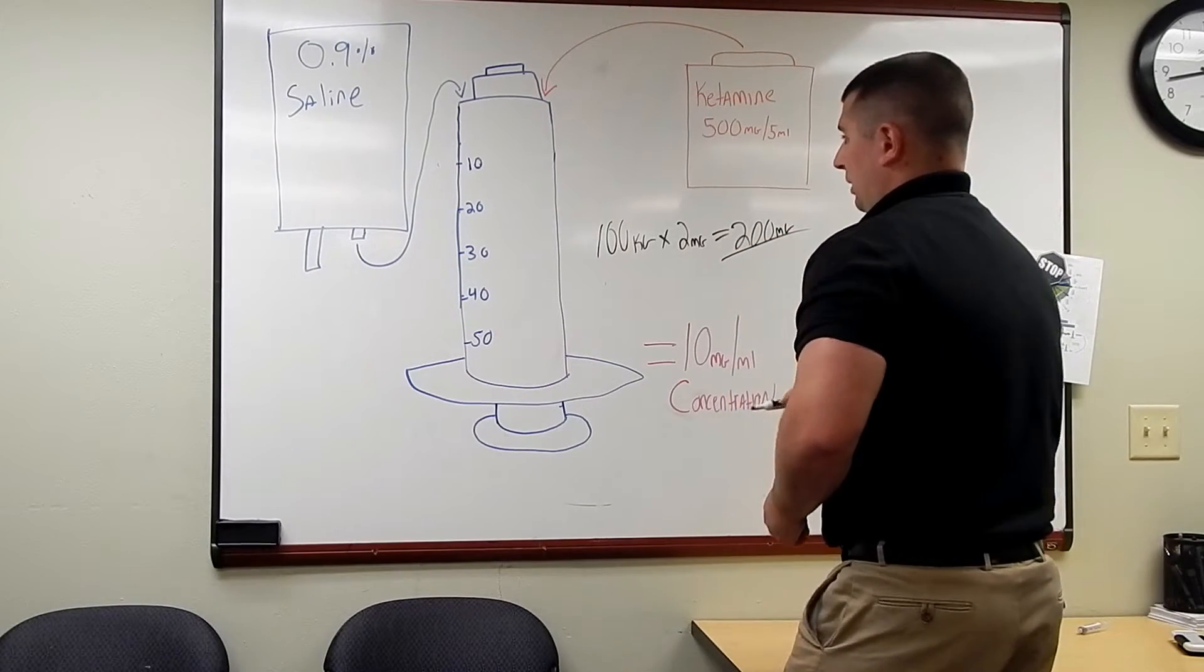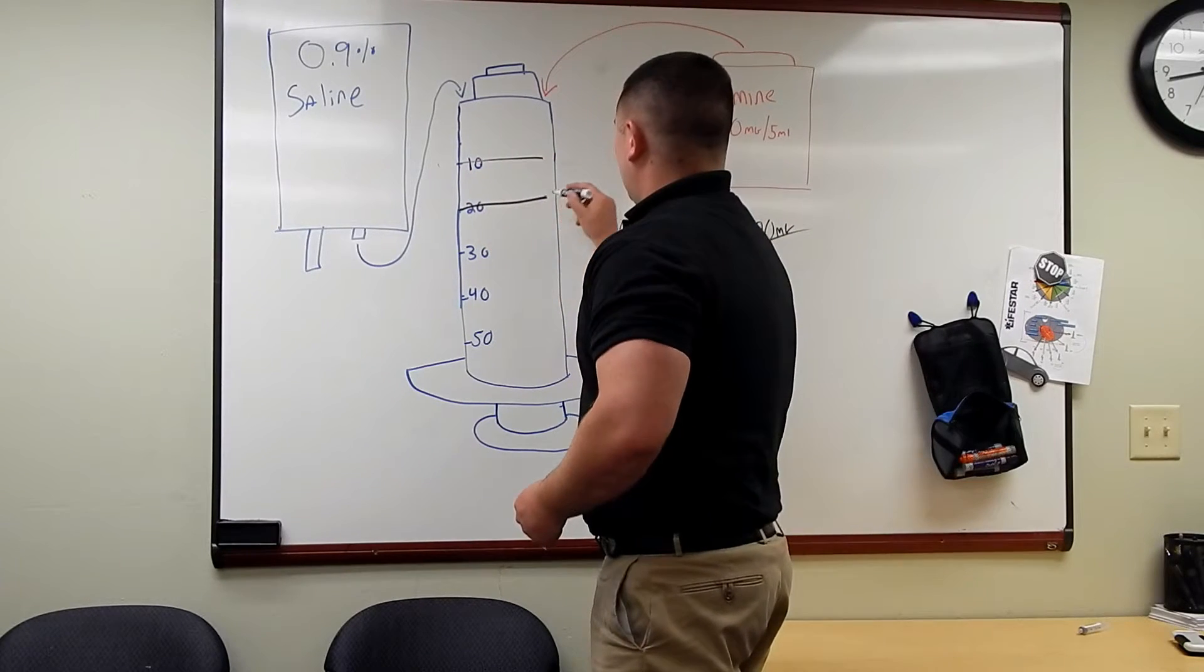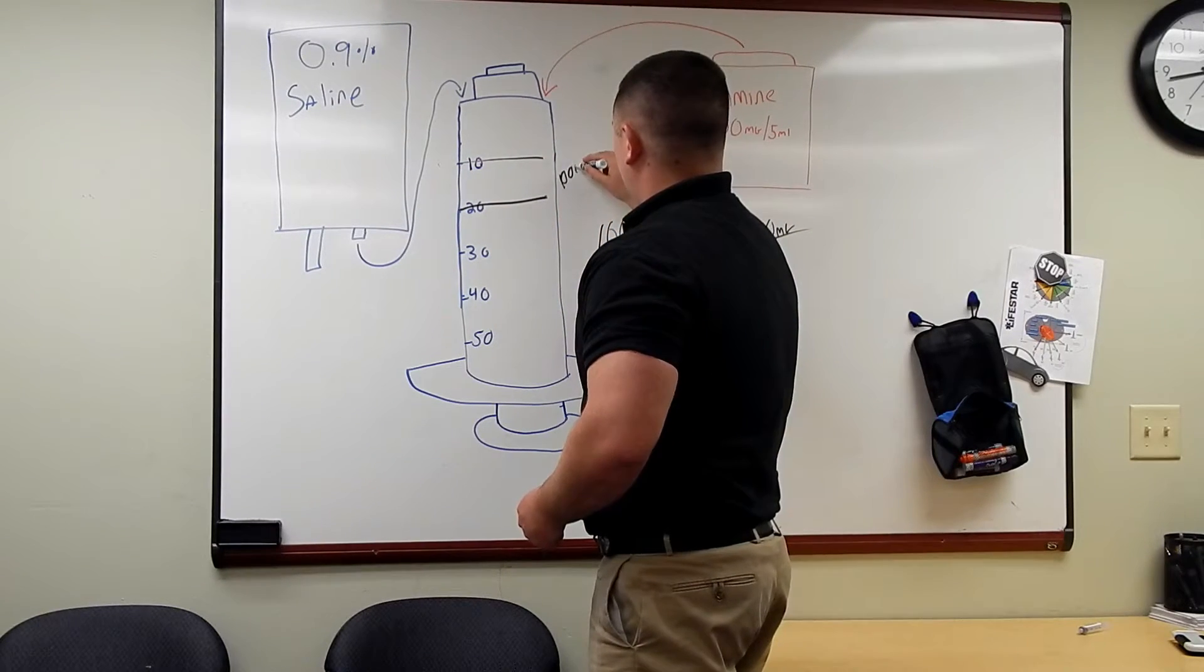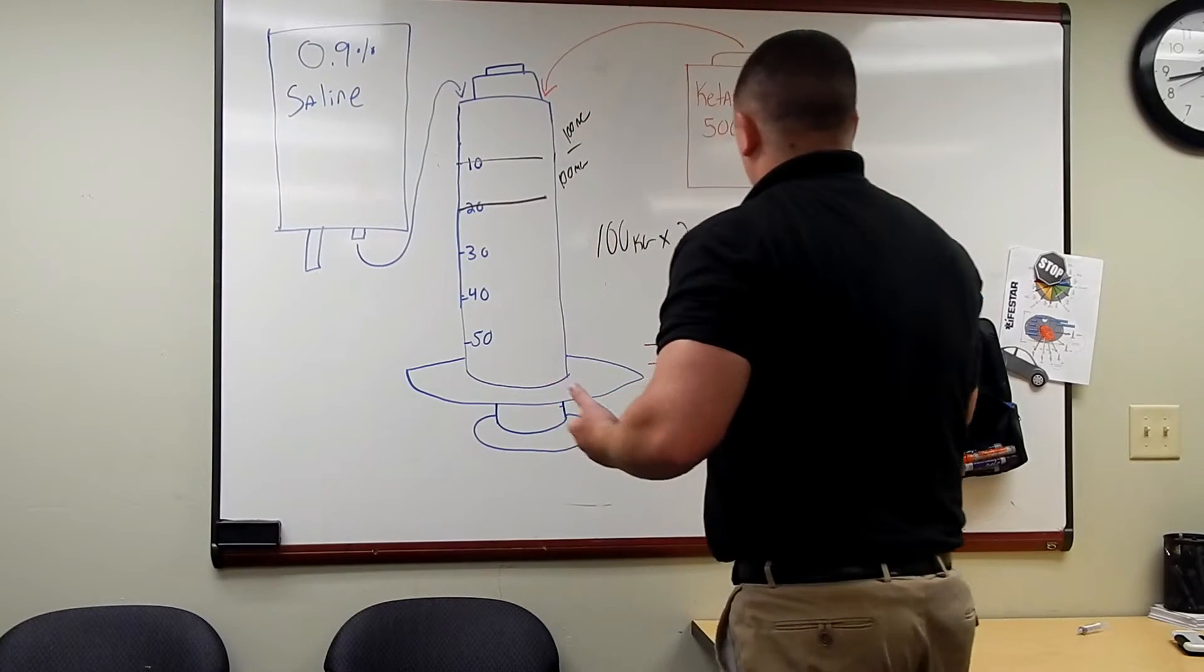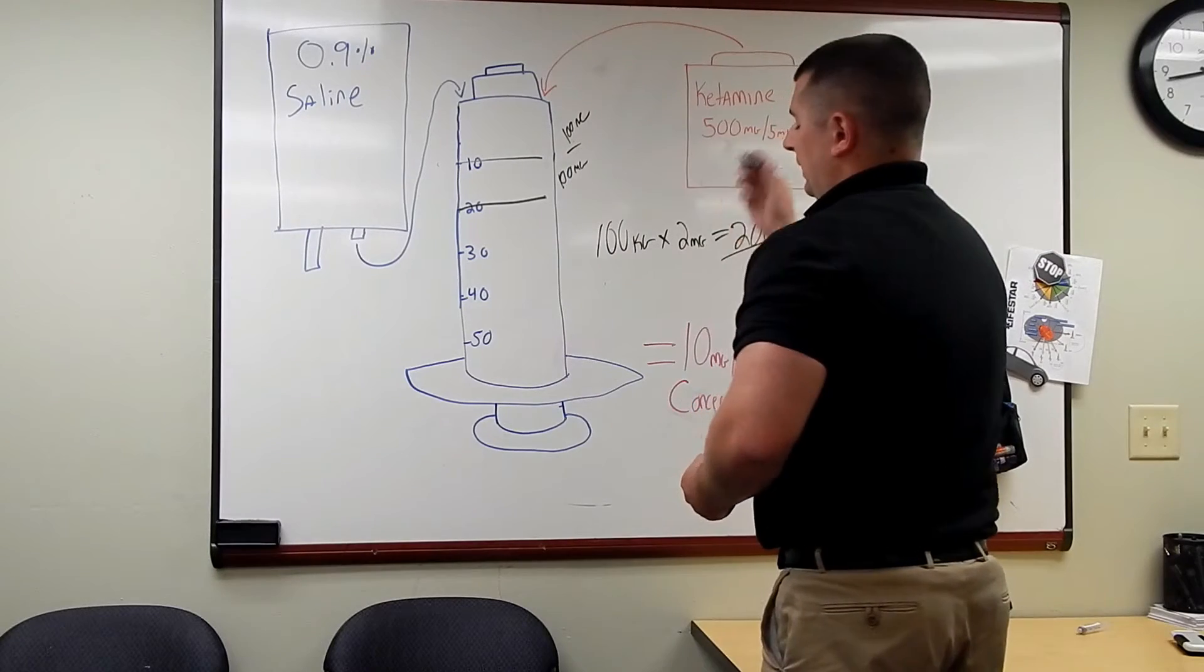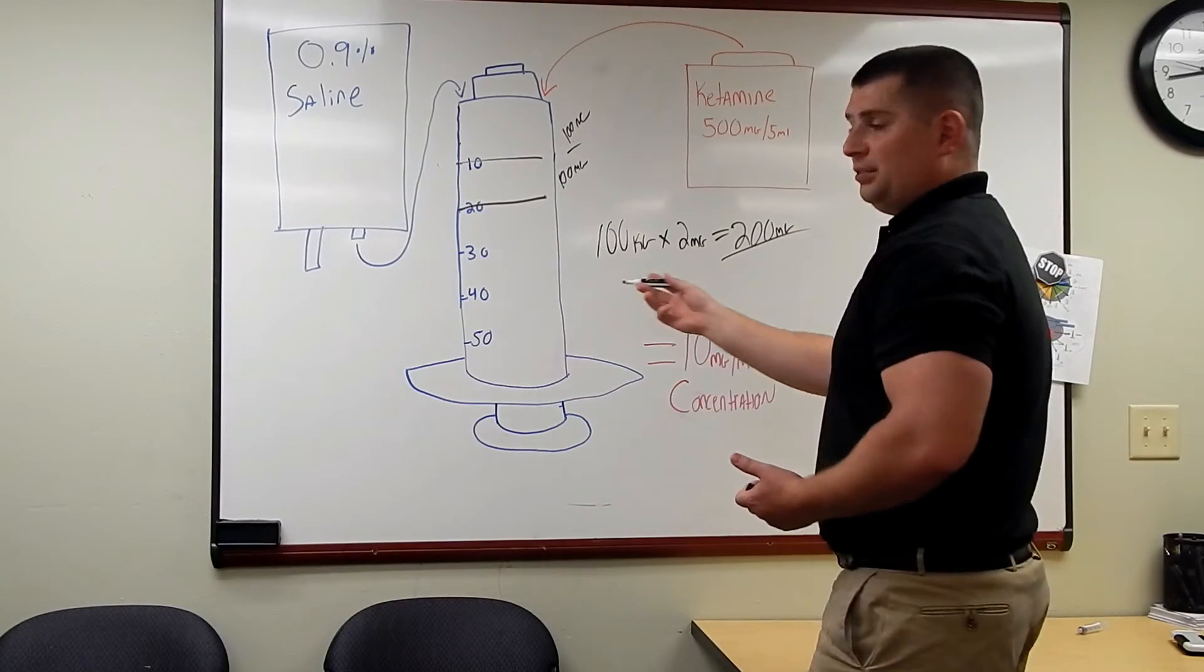Well, 10 milligrams per mL, so I know for every 10 mLs I give, it's going to be 100 milligrams. So I want to give 200 milligrams, I give 20 mLs. Now how much do I got left? I got 30 cc's left.